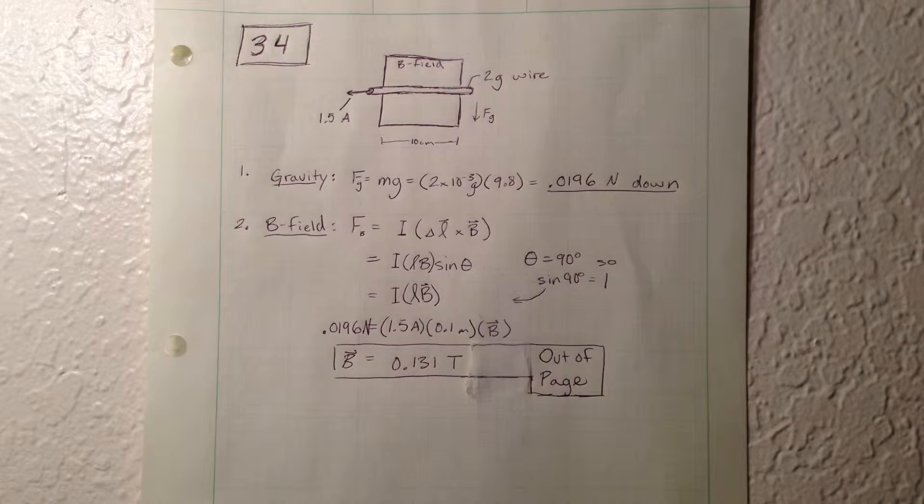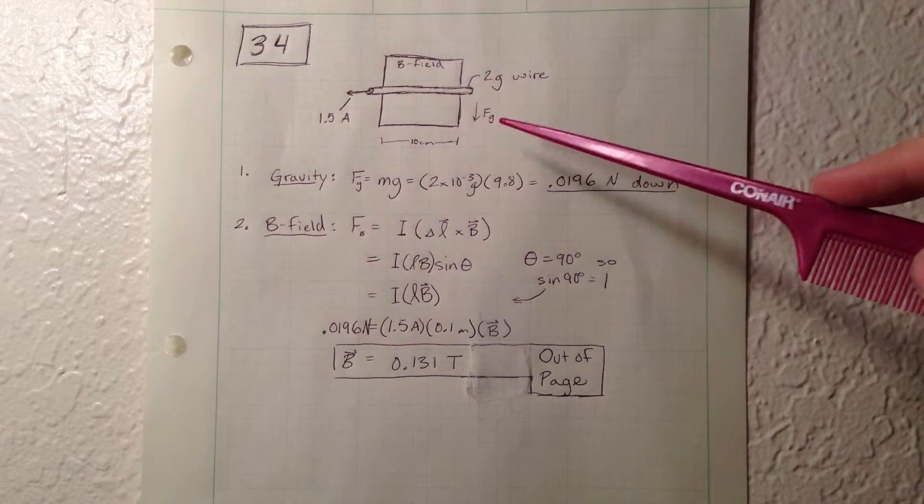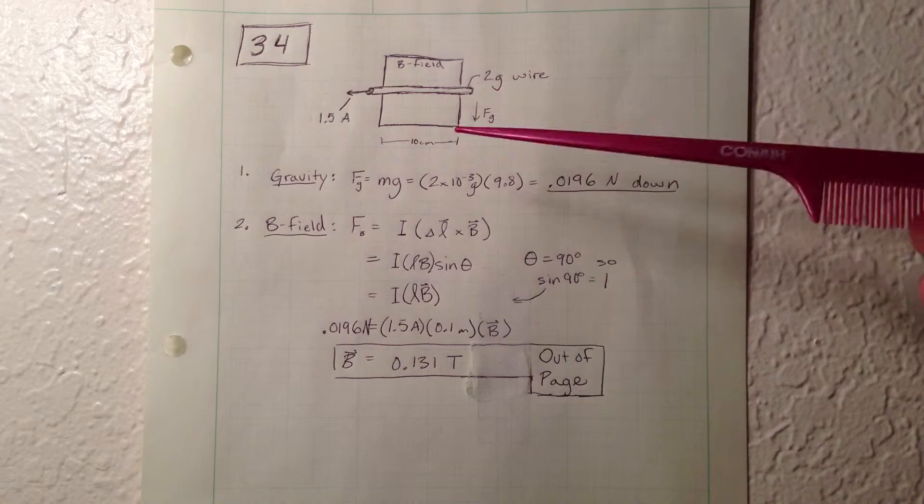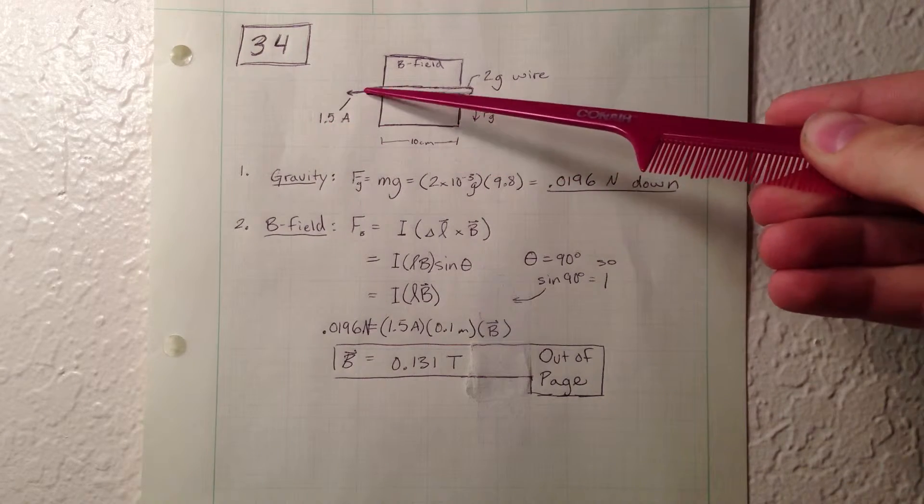Number 34. The problem gives us a 2 gram wire with a current flowing through it of 1.5 amps to the left. That's what I have drawn right here.